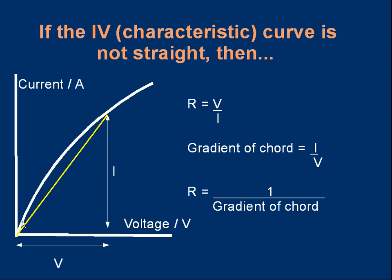Some students think you can find the resistance at a point by drawing the tangent to the curve, finding its gradient, and using one over the tangent's gradient — that's not correct. You must use the chord. There is one exception: if you want the resistance for very small values near the origin, you can draw the tangent to the curve at the origin, and resistance equals one over the gradient of that tangent. But that only applies to the tangent at the origin; otherwise, always use chords.